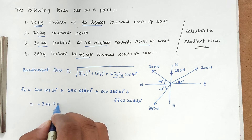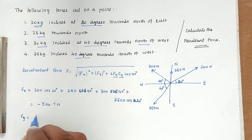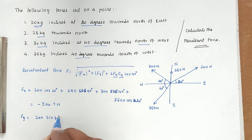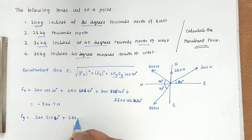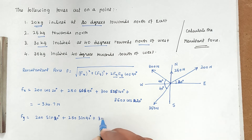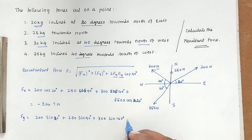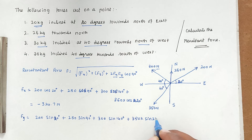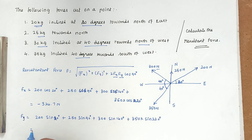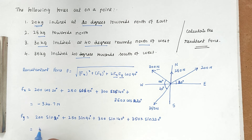For the vertical force Fy: we take 200·sin 20°, plus 250·sin 90°, plus 300·sin 140°, plus 350·sin 120°. Solving this, we get Fy = 317.9 N.